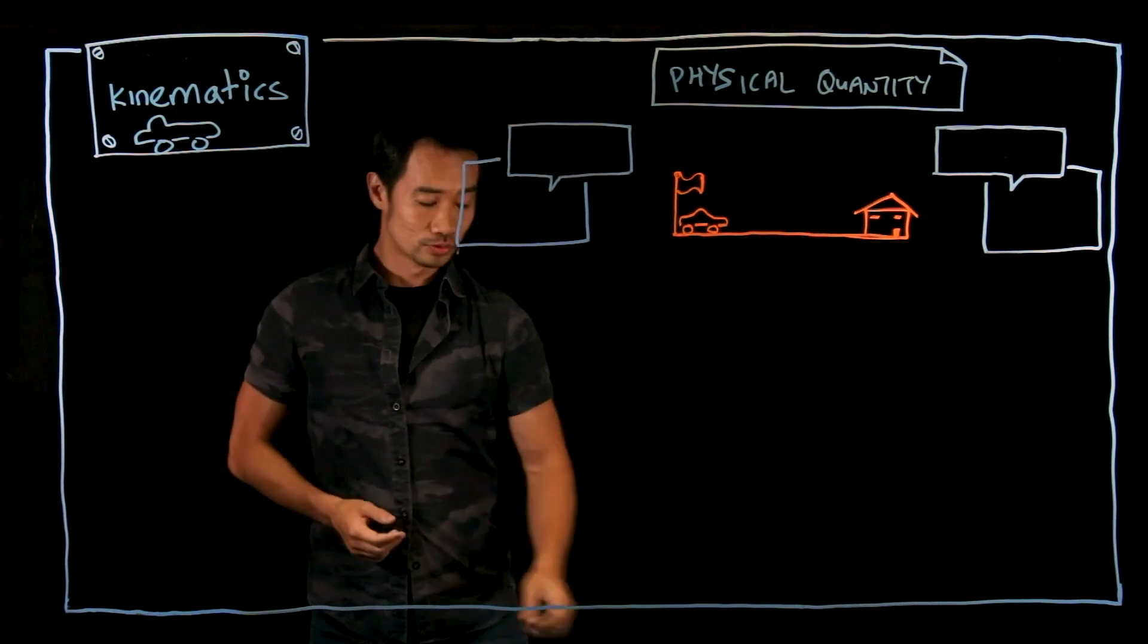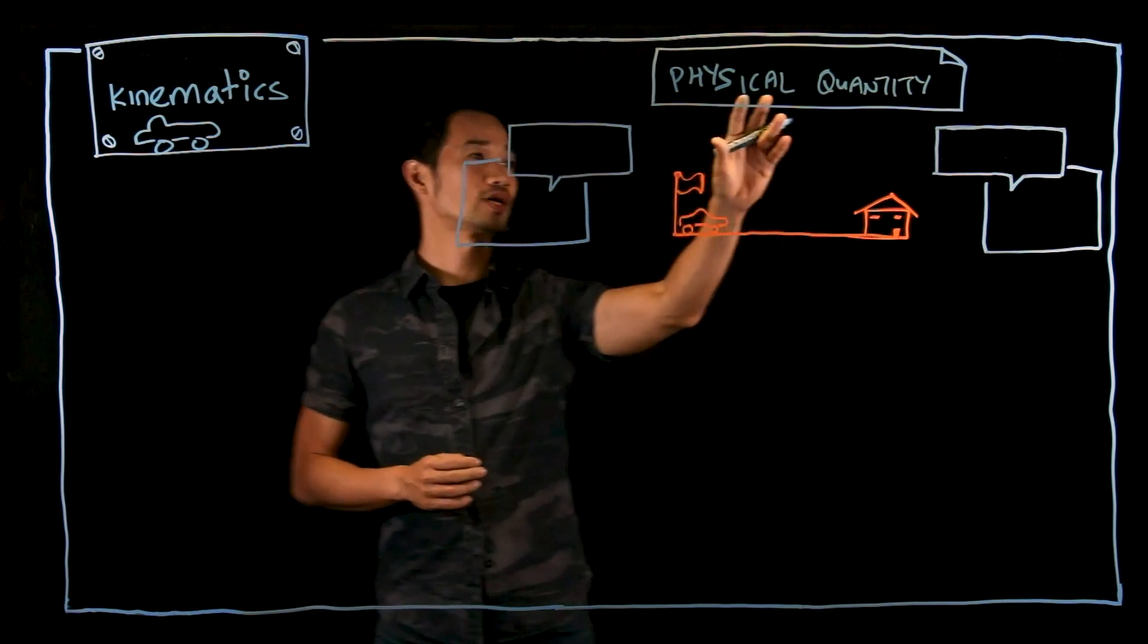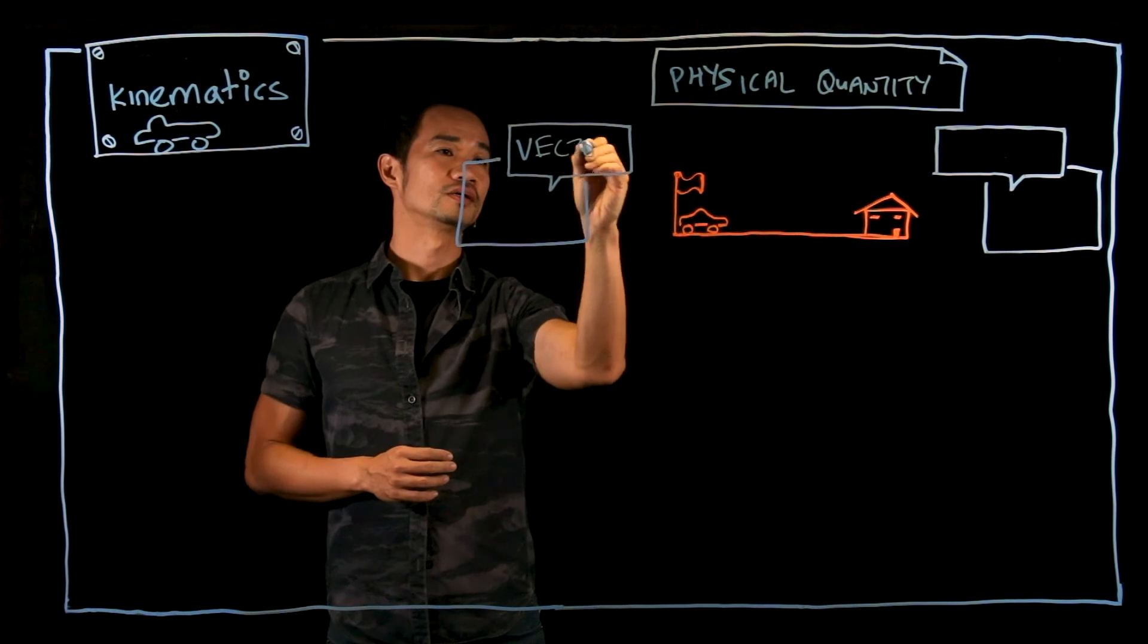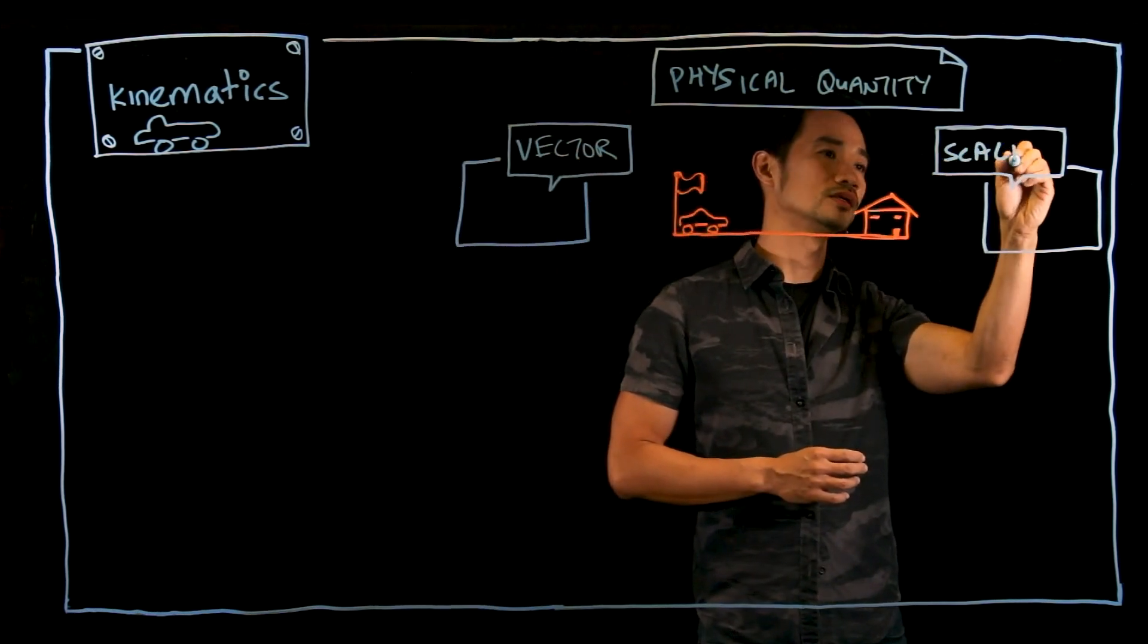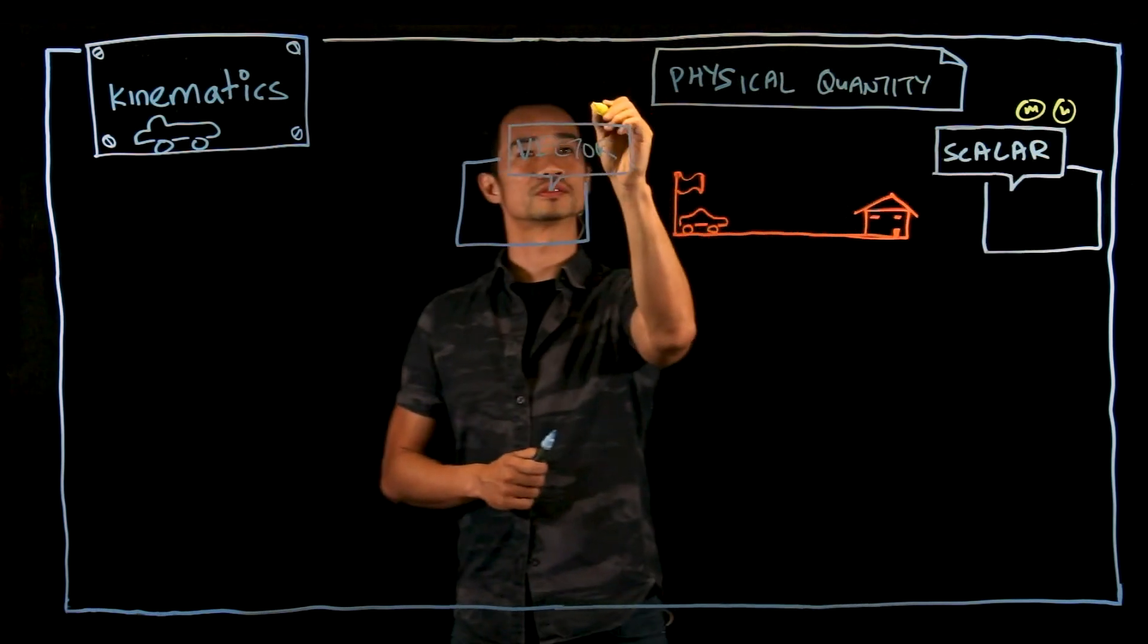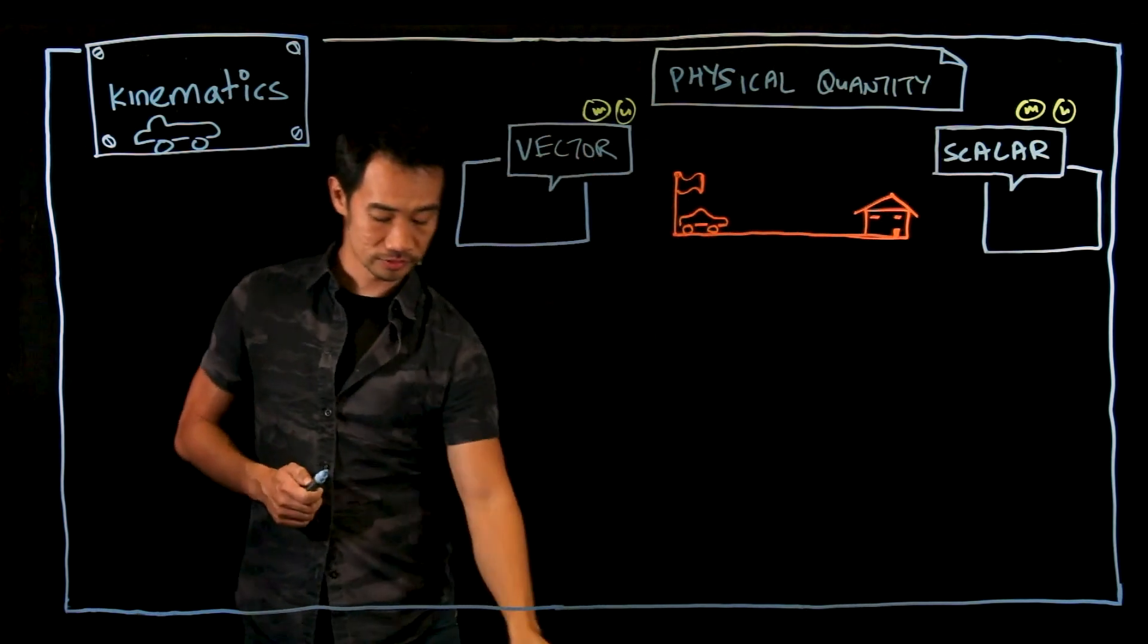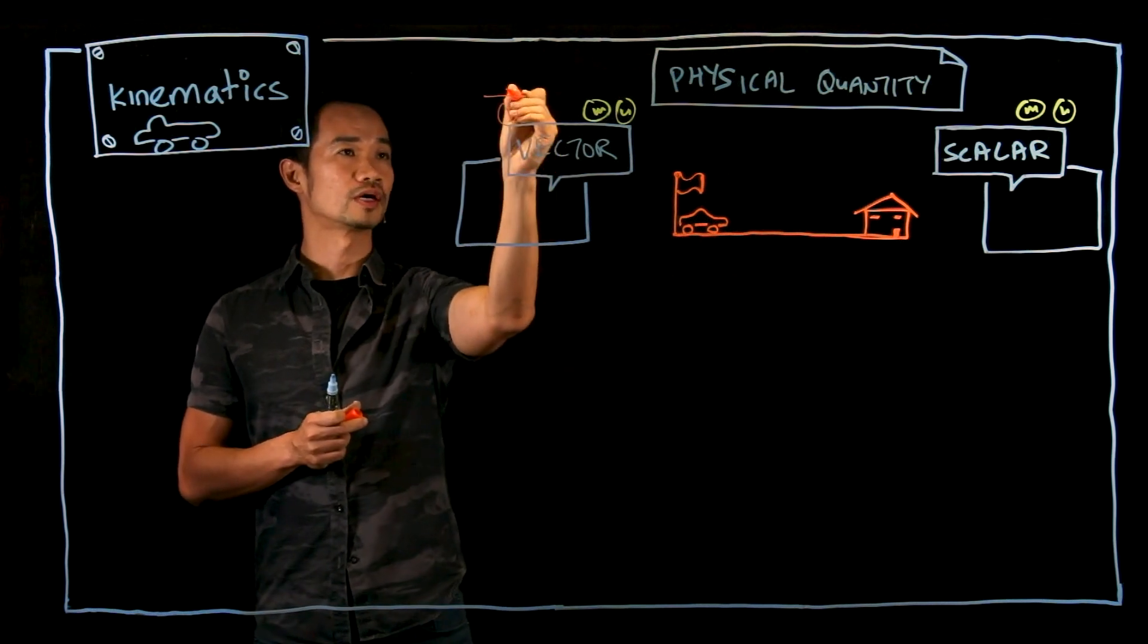We are back for more physics. So in the last video I introduced to you there are two types of physical quantities. You have the vector quantity and the other one is the scalar quantity. And I shared with you that both quantities have magnitude and units, but the vector quantity has the additional dimension of direction.